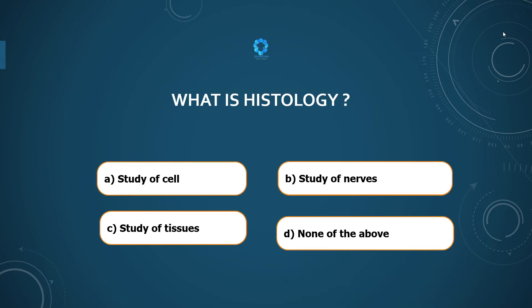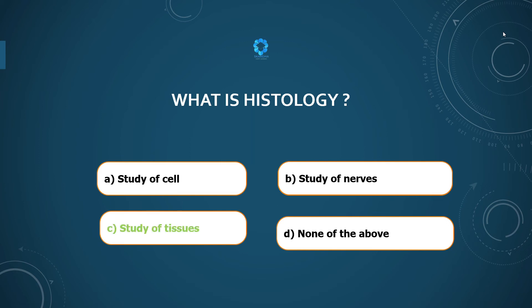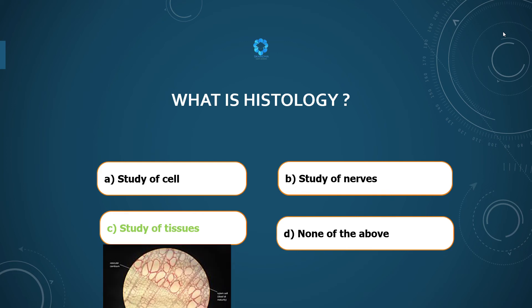What is histology? Study of cells, study of nerves, study of tissues, or none of the above? The answer is study of tissues. Tissue is a group of cells similar in structure and similar in function.